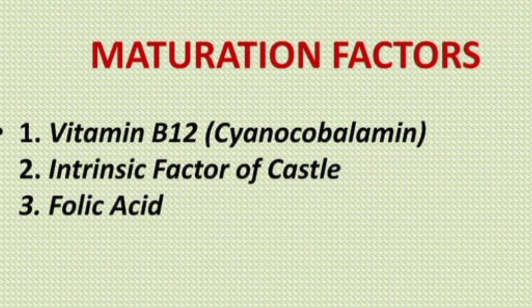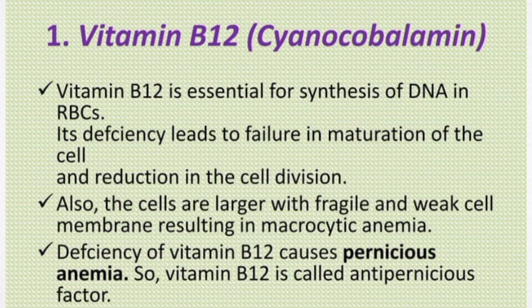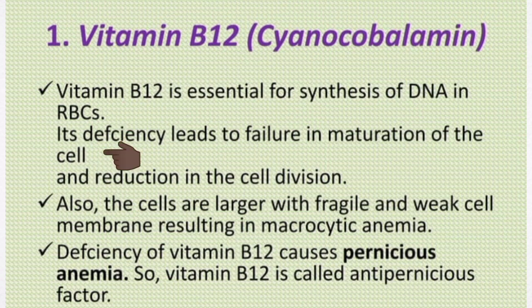The maturation factors implicated in erythropoiesis are vitamin B12, intrinsic factor, and folic acid. Vitamin B12 is a maturation factor necessary for erythropoiesis. It is referred to as the extrinsic factor because it is obtained mostly from the diet. It is absorbed from the intestine but requires the presence of intrinsic factor for absorption. Vitamin B12 is mostly stored in the liver, and when necessary, it is transported to the bone marrow to promote the maturation of red blood cells.